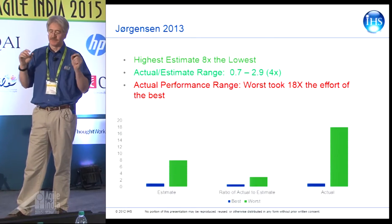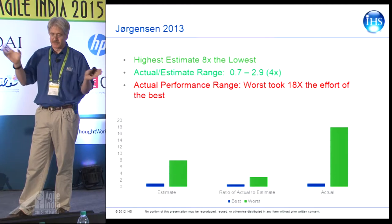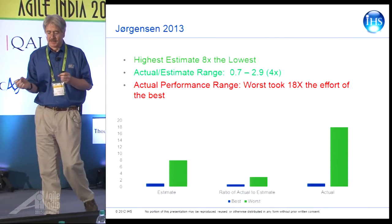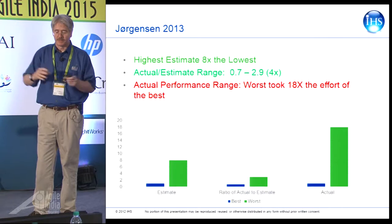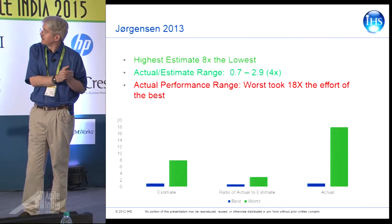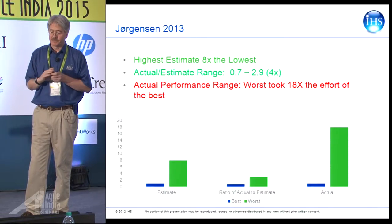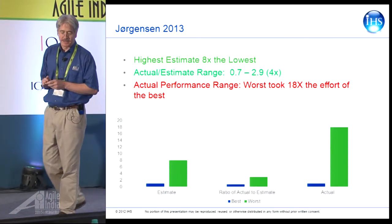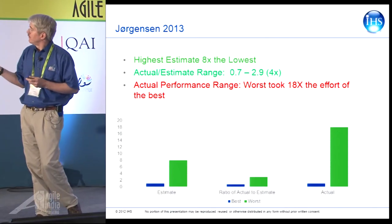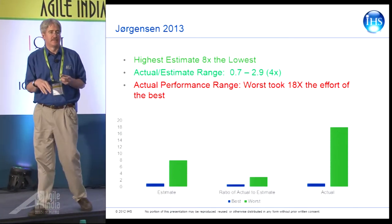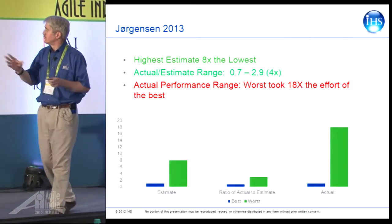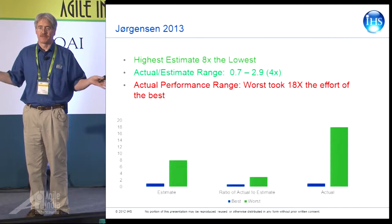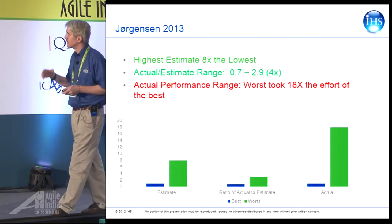If we look at the actual versus the estimate, we see this power of 4 behavior. The range goes from one team coming in at 70% of their original estimate to the worst case at 2.9 — an overall range of about 4 to 1. And the worst team took 18 times the effort of the best. Huge ranges of uncertainty, huge ranges in performance. The idea that we could estimate so accurately given this natural uncertainty is just unrealistic.